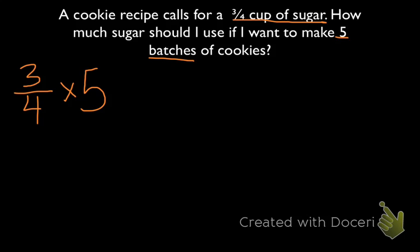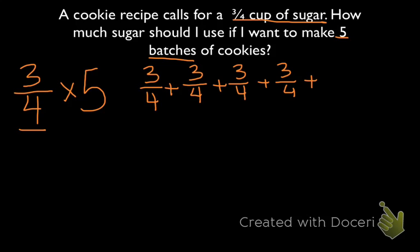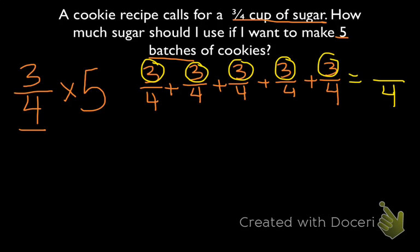Now let's represent this as a repeated addition problem. We're basically taking 3 fourths and adding it together 5 times. That becomes 3 fourths plus 3 fourths plus 3 fourths plus 3 fourths plus 3 fourths. I'm going to keep my denominator of 4 the same and add the 3s together. So 3 plus 3 plus 3 plus 3 plus 3 gives us 15. As an improper fraction we have 15 fourths cup of sugar.